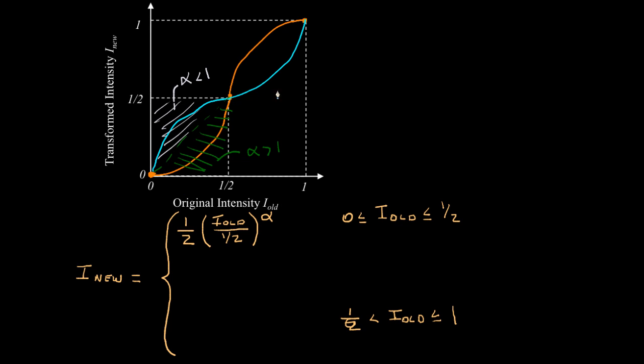Now, what are we going to do over this interval? Over this interval, I'll write my equation like this: 1 minus 1/2 times (1 minus the input intensity) scaled by 1/2, and raised to the power alpha.